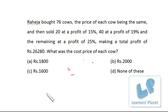Now let's see this problem. Raheja bought 76 cows, the price of each cow being the same, and then sold 20 at a profit of 15%, 40 at a profit of 19%, and the remaining at a profit of 25%, making a total profit of 26,280 rupees. What is the cost price of each cow?